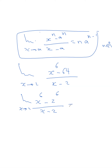Applying the theorem, we put the power 6 in front, keep the base 2, and subtract 1 from the power to get 2^5. So the result is 6 times 32, which equals 192.